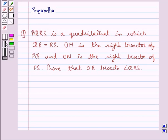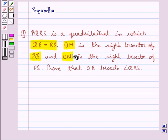Hello and welcome to the session. In this session we discuss the following question: PQRS is a quadrilateral in which QR is equal to RS, OM is the right bisector of PQ and OM is the right bisector of PS. Prove that OR bisects angle QRS.